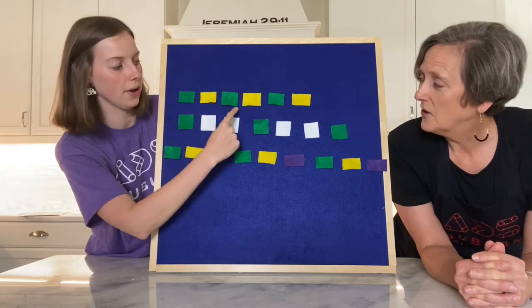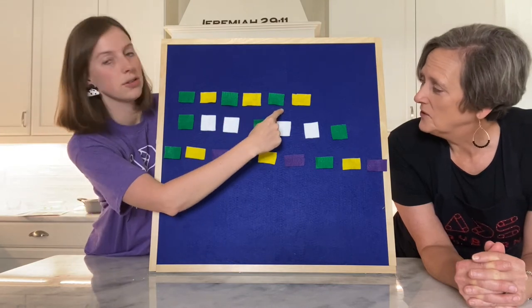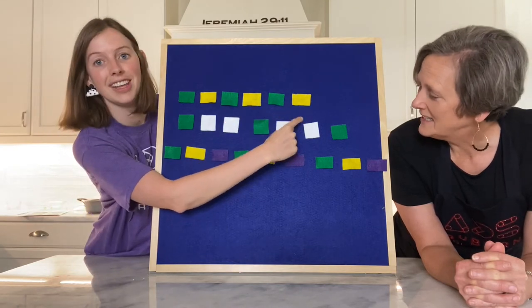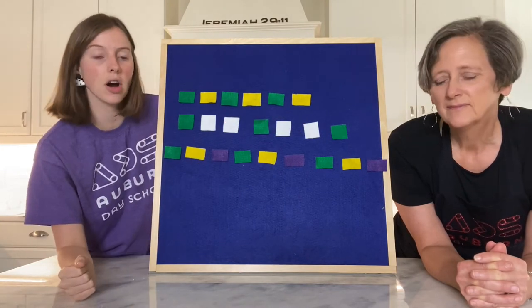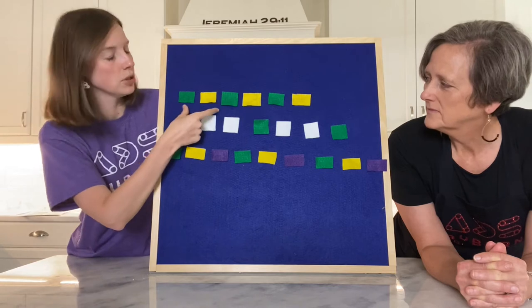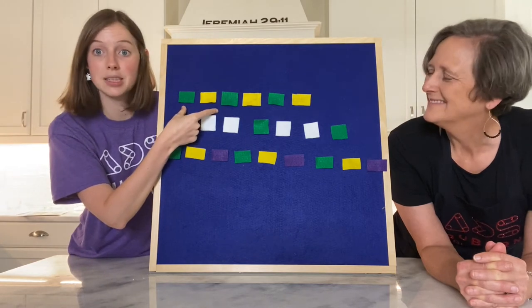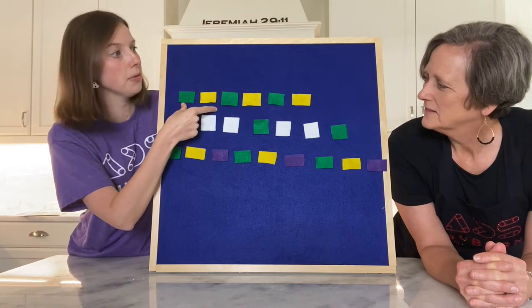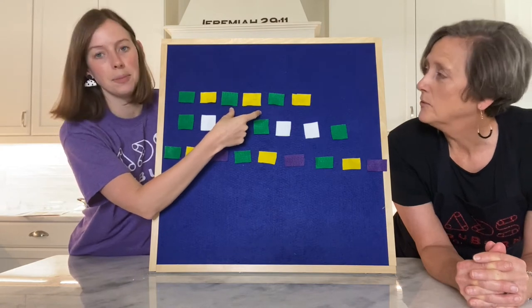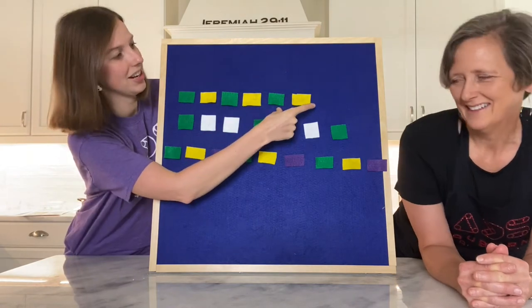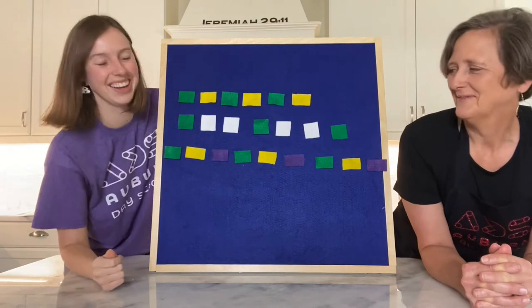Green, yellow, green, yellow, green, yellow. So we could call this pattern green-yellow, because that's the part that repeats. Green, yellow, repeat. Green, yellow, repeat. Green, yellow, repeat — and we could keep going.